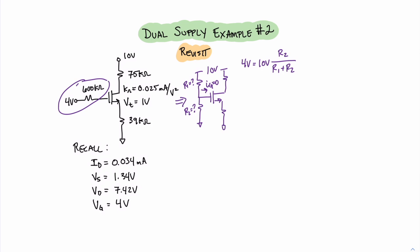This is a voltage divider equation. Rearranging this equation to solve for R2, we get R2 equals 0.4 times R1 plus R2. Now, what we need to do is recognize that we can do a Thevenin equivalent of this left side. In that case, these two resistors appear in parallel, and the value of these two resistors in parallel that we desire comes from the value of 600 kilohms in the original circuit. So therefore, we can write that 600 kilohms equals R1 times R2 divided by R1 plus R2.